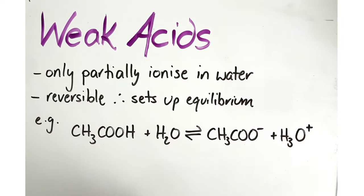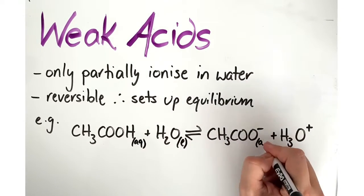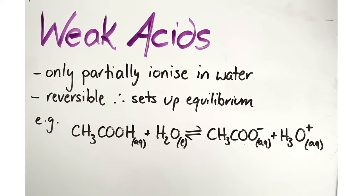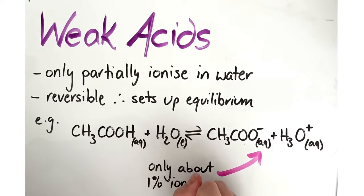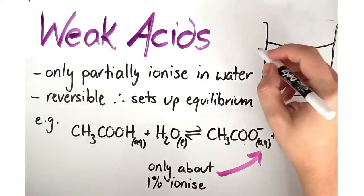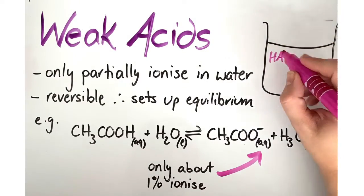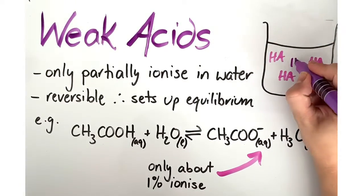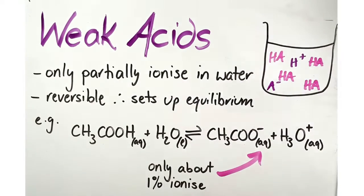However, the reverse reaction in this case is favored over the forward reaction. This means that the ions react very readily with each other to reform the acid and water. In fact, for ethanoic acid at any one time only about 1% of the ethanoic acid molecules have converted into ions. Most molecules remain as ethanoic acid.